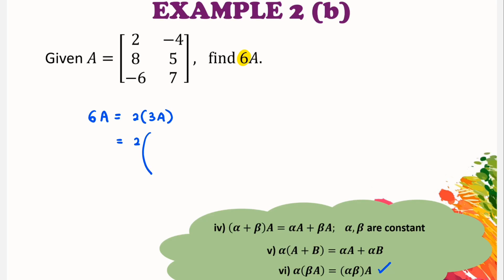So then we just multiply 2 with all the elements of the matrix that we have obtained in part A. So part A answer is 6, negative 12, 24, 15, negative 18 and 21.